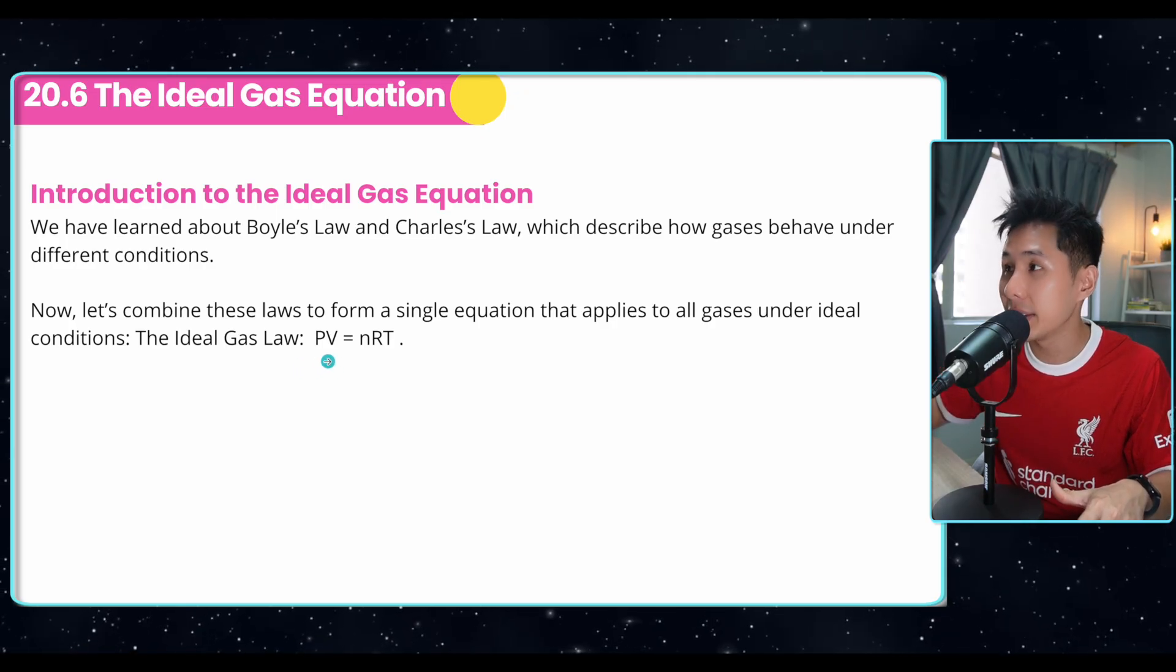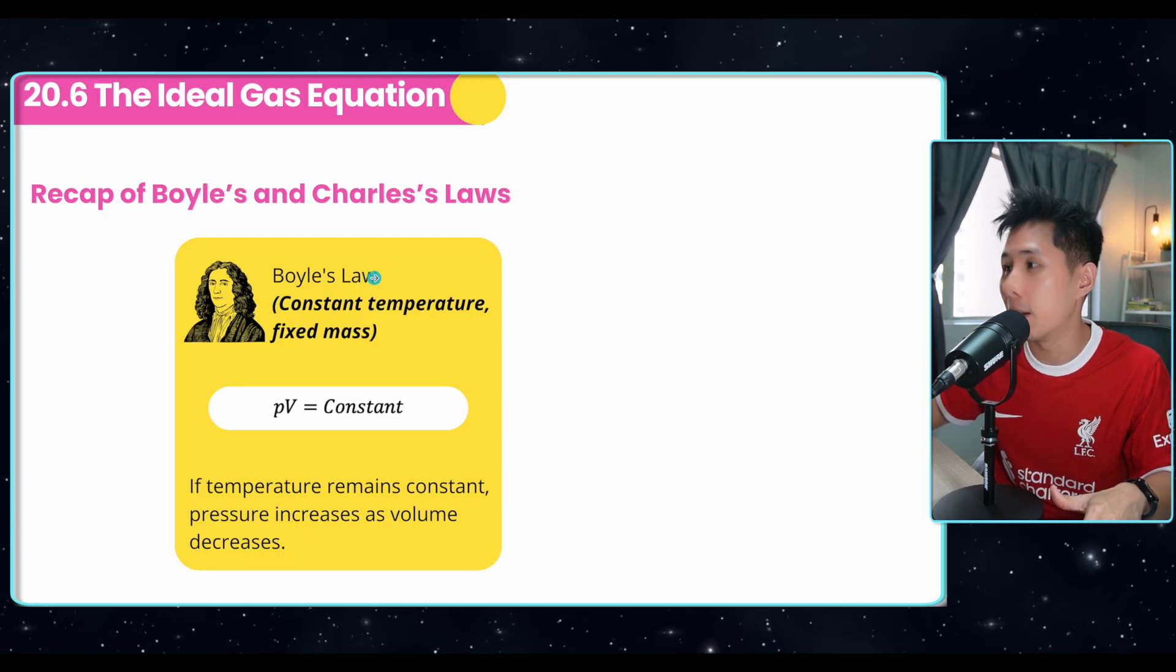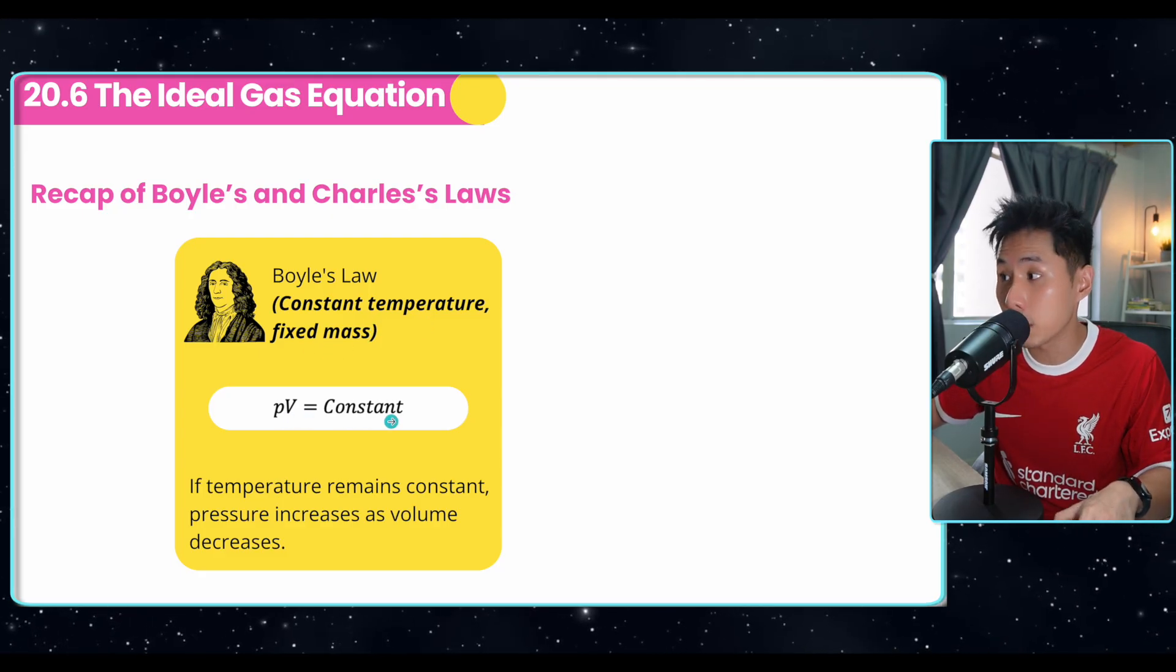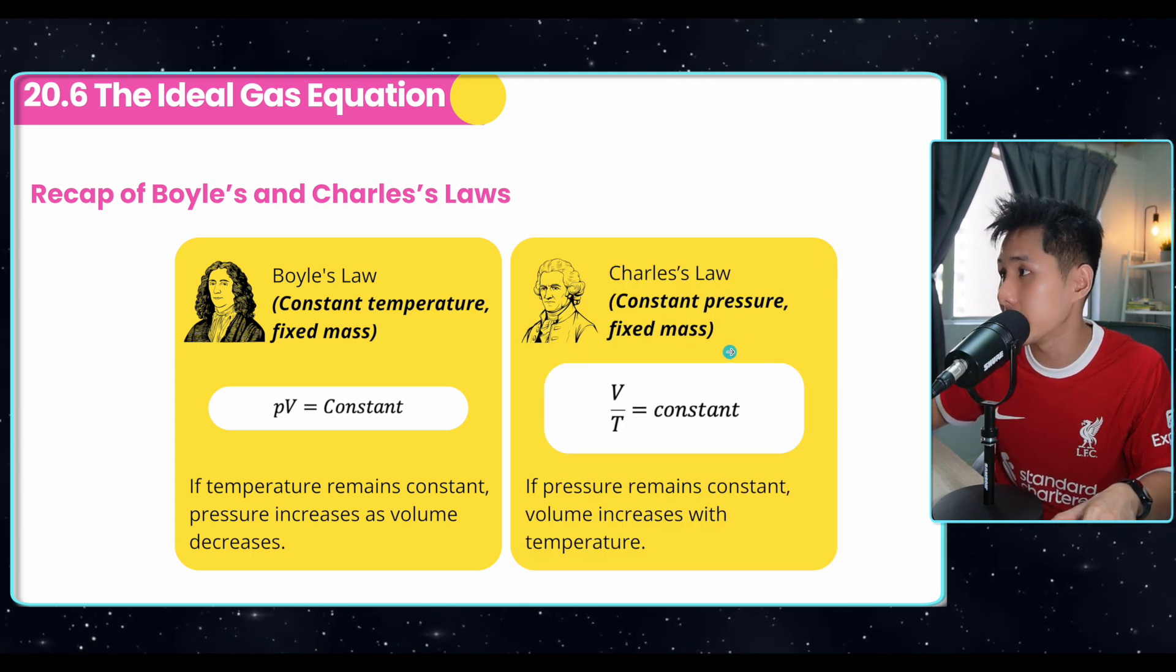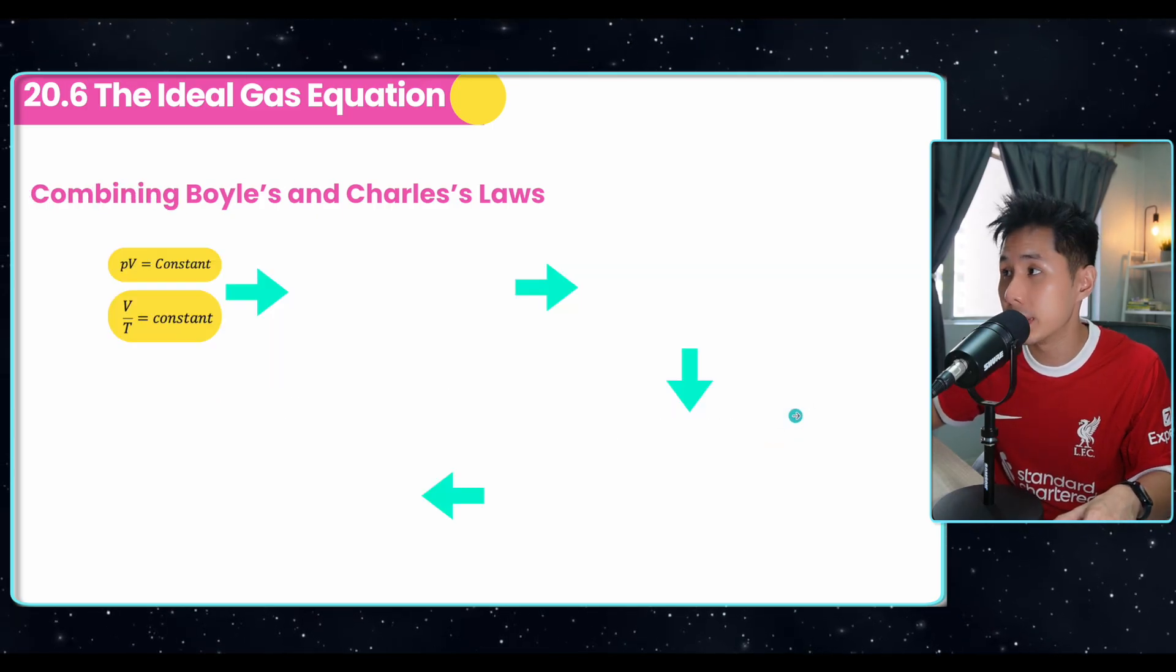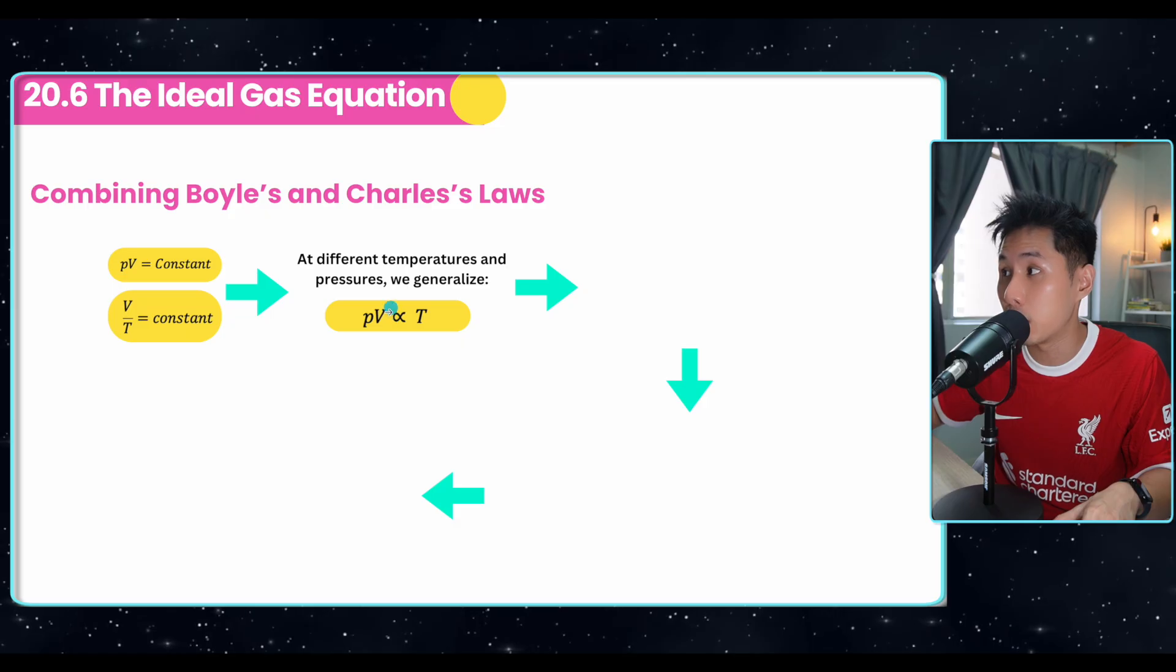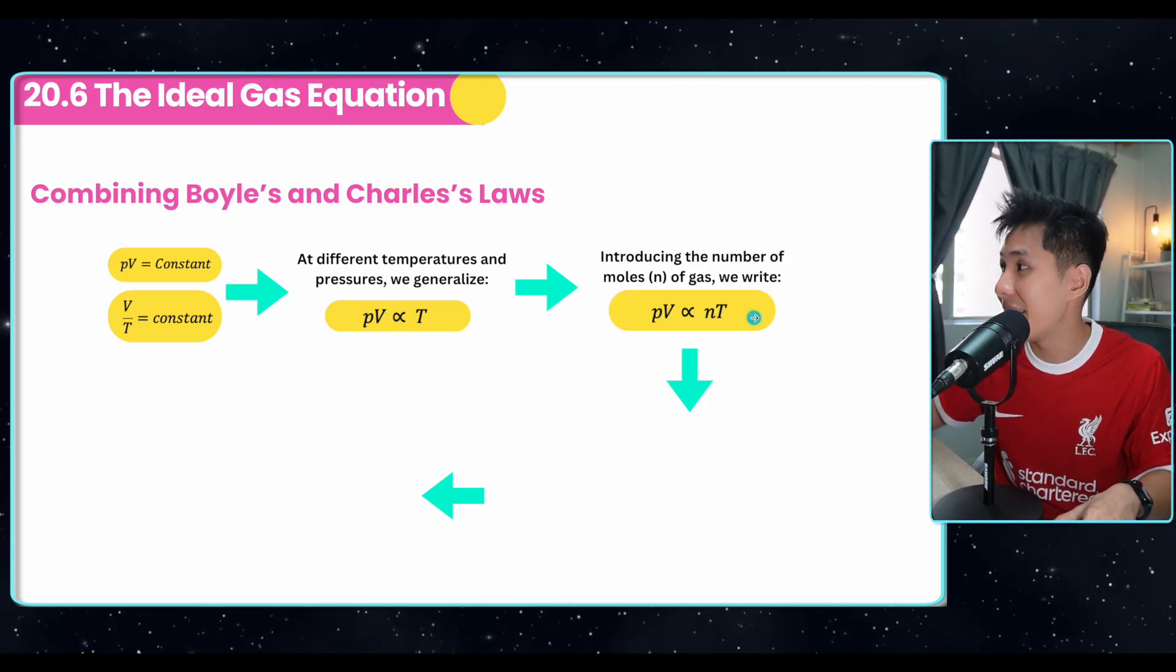So if we look at Charles Law, the ideal gas will move just like a straight line, but the real gas will probably deviate due to the intermolecule attraction. So now you have known the difference between ideal gas and real gas. Just remember that the following lecture, we are based on the ideal gas scenario. And let's try to use Boyle's Law and Charles Law to form this equation. So recap of Boyle's Law and Charles Law. So for Boyle's Law, it state that when temperature is constant, and there's a fixed mass, pressure and volume, they are inversely proportional to each other. And Charles Law assume that the pressure is constant, mass is constant, and the volume increases with temperature.